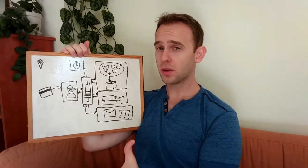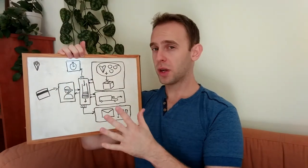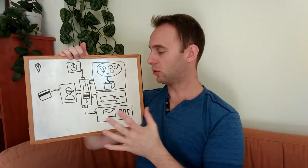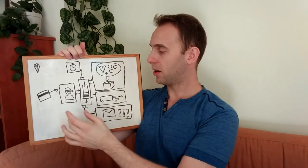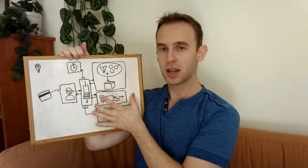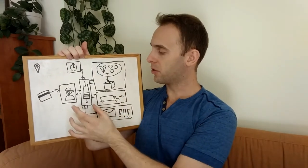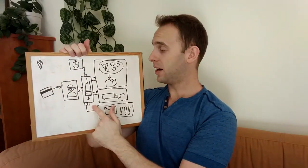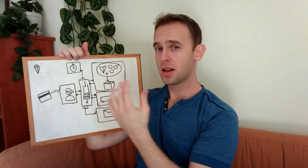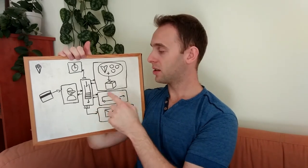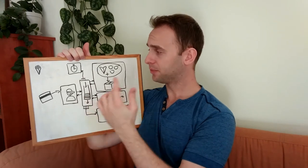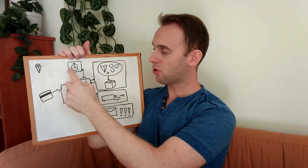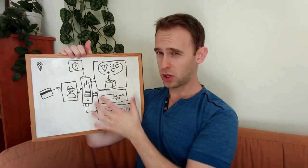Now let's look at how this architecture solves the issues we had before. The first issue was coupling — now you can see that all services don't even know about each other. The packaging service doesn't know about the ordering service, the notification service, or the delivery service. Each service is coupled only with the queue. It doesn't matter how many services there are — they will all be coupled only with the queue and will not change if another service is added.